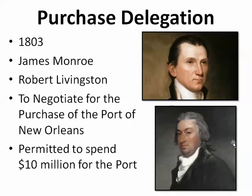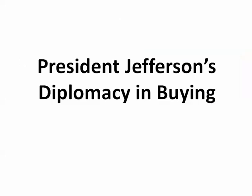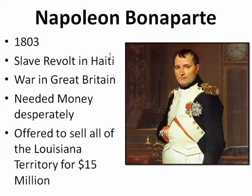The diplomacy used by Monroe and Livingston, under Jefferson's instructions, was to go offer Napoleon Bonaparte the purchase of that port. Napoleon was engaged in war in Europe, trying to take over the continent. In 1803, he was having problems: there was a slave revolt in Haiti, which France owned, and he was coming close to war with Great Britain. He needed money desperately to carry out his war campaigns. So he authorized one of his agents to offer to sell all of the Louisiana Territory — not just the port — for $15 million.